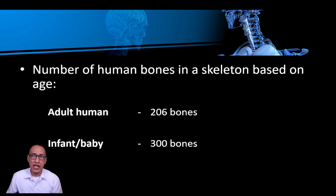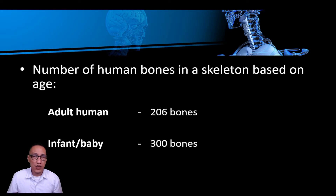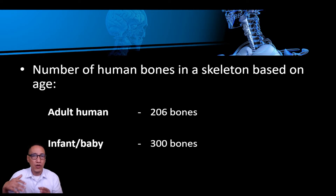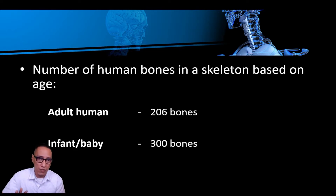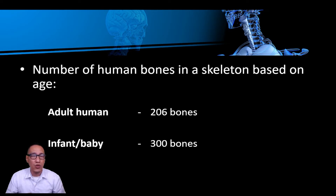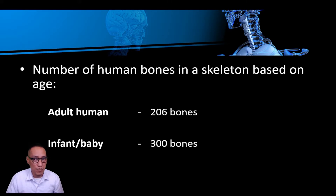Take note that the number of human bones in the skeleton based on age varies — nagbabago depende sa edad. Sa infant or baby kapag ipinanganak tayo, actually 300 bones ang meron sa katawan ng isang baby, kasi kagagawa pa lang ng mga buto sa loob ng katawan niya. But habang tumatanda ang isang tao, nag-fuse ang mga butong yun. That is because of the pressure applied — pag baby pa, malambot pa. But habang lumalaki, natututo siyang suportahan ang sarili, tumayo, at nag-fuse na yung mga ilang buto, kaya nagiging 206 bones na lang pag matanda na.